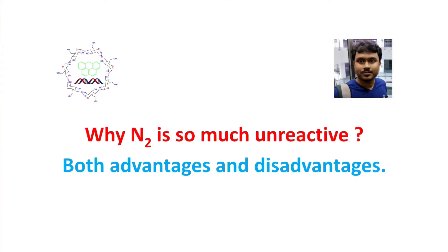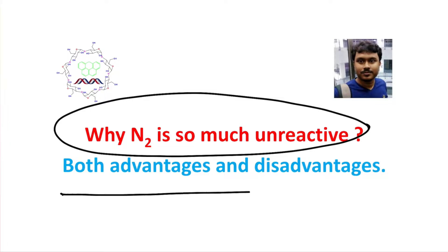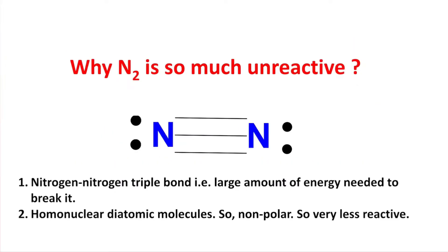Dr. Tanmay Bhishra. Today we shall learn about why nitrogen is so unreactive, and what is the advantage and disadvantage of this lesser reactivity. The nitrogen molecule N₂ has a nitrogen-nitrogen triple bond — one sigma bond and two pi bonds.